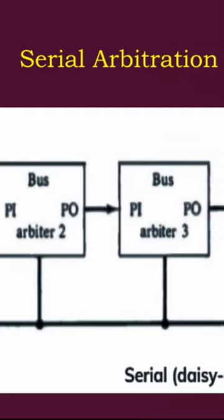This is a diagram of daisy chain arbitration. We can see there are different devices and different buses, and there is a bus busy line commonly controlled by all the arbiters. There are arbiters one, two, three, four, and it goes on and on based upon the device specification. The input I is given from outside.